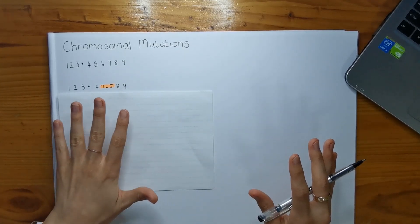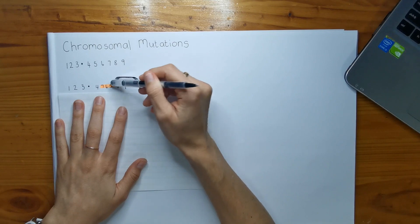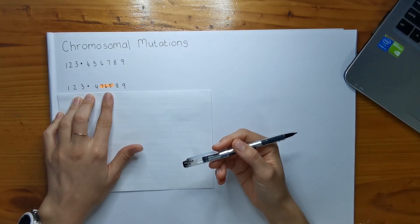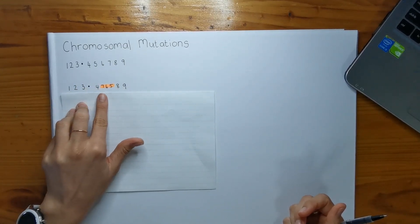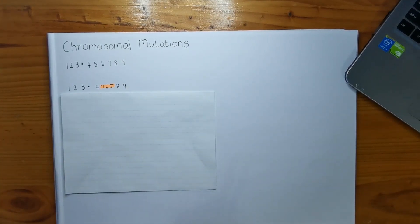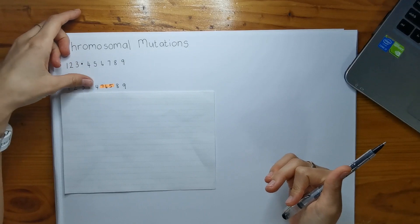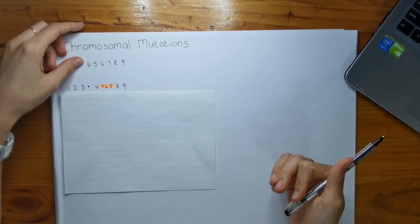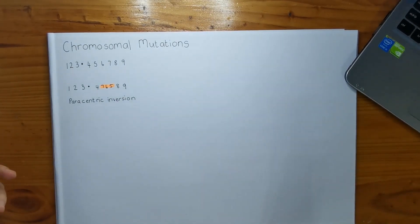This is for part A of the question, and I've already highlighted what the strange mutation is. It actually encompasses the 5, 6, 7 area of this chromosome. In the original chromosome the sequence was 5, 6, 7, but now it has become 7, 6, 5, which leads me to believe that this is an inversion. The other important thing is you get two different types of inversions - paracentric and pericentric inversions. This one is a paracentric inversion because the centromere is not included in this mutation.